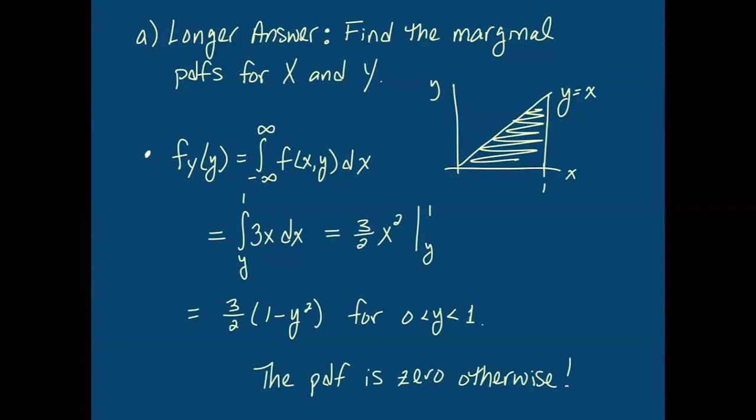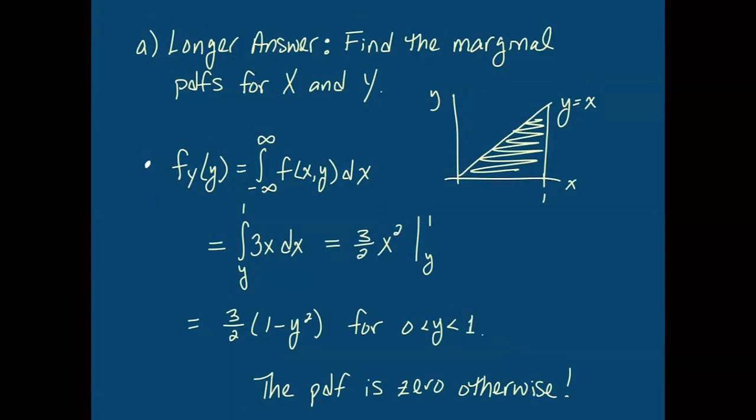So, given these two marginal PDFs and how complicated they look, it's easy to see that multiplying them together will not give us the original PDF of 3X. We have therefore shown, again, that X and Y are not independent.